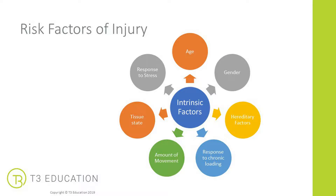The internal or intrinsic risk factors of injury include age, gender, hereditary factors, response to chronic loading, how their body responds to over- or under-training, the amount of movement they do day to day, the quality of their tissue, and how they respond to stress. These are just some of the factors that can impact or increase the risk of injury.